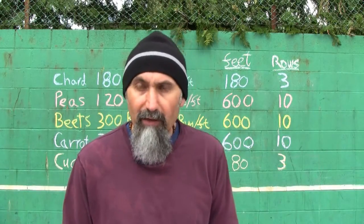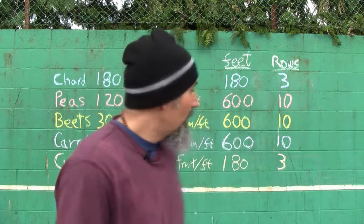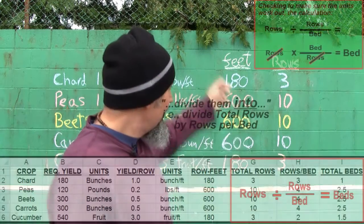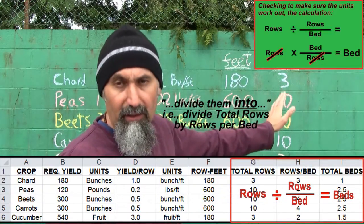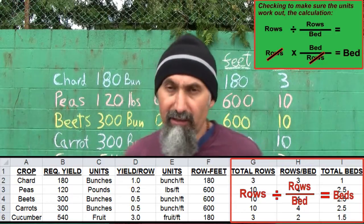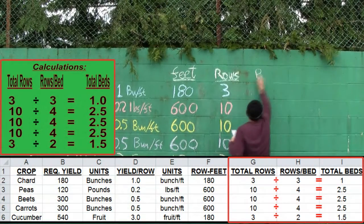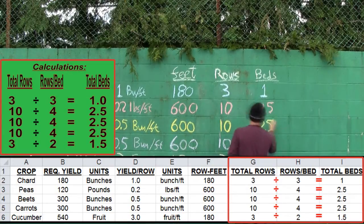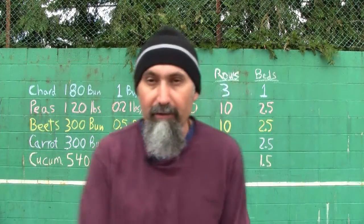To figure out how many beds each item uses, we divide the total number of rows by the rows per bed. That tells us how many beds of each item we'll be planting, which essentially defines our section. The total beds per crop breaks down as: 1 bed of chard, 2.5 beds of peas, 2.5 beds of beets, 2.5 beds of carrots, and 1.5 beds of cucumber.